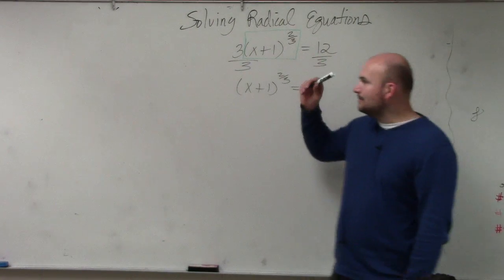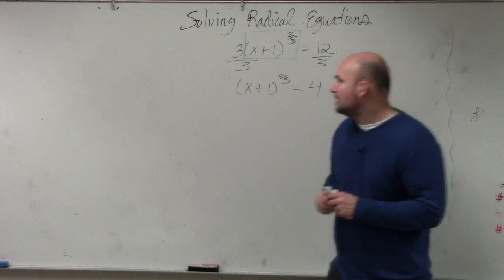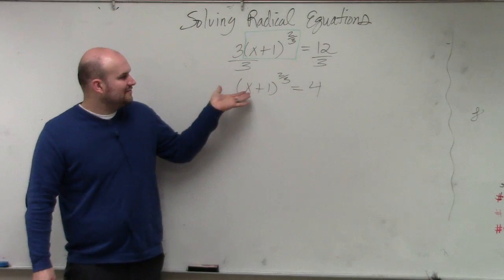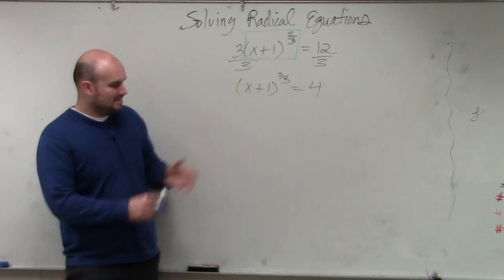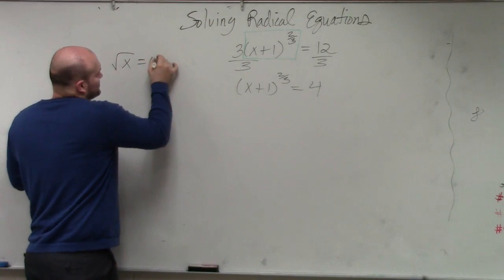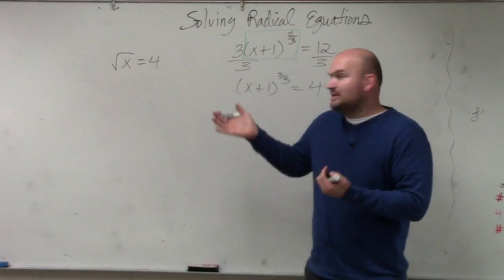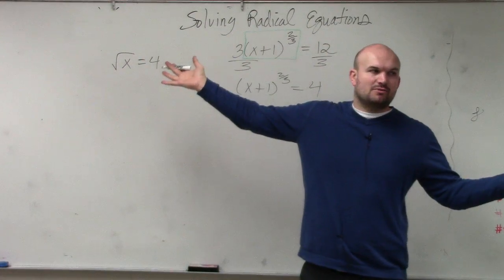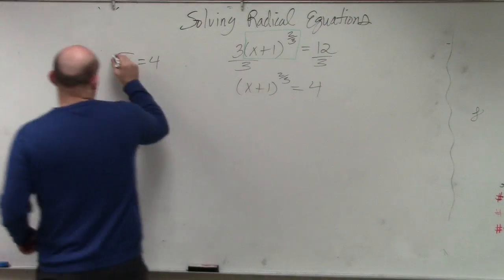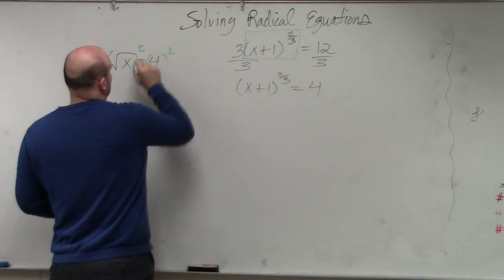So exactly what I believe Kyle was talking about was: if you have the square root of x equals 4 and you want to solve for x, then you need to undo taking the square root. How do you do that? You square both sides. That's kind of like — you guys hopefully understand that.